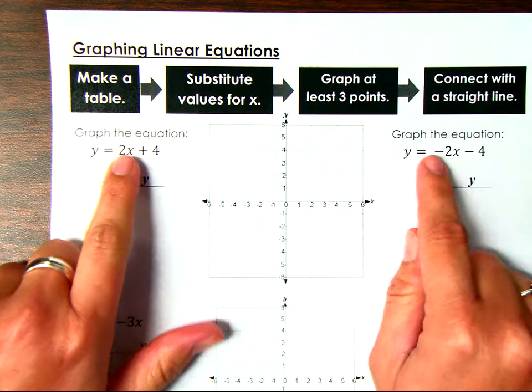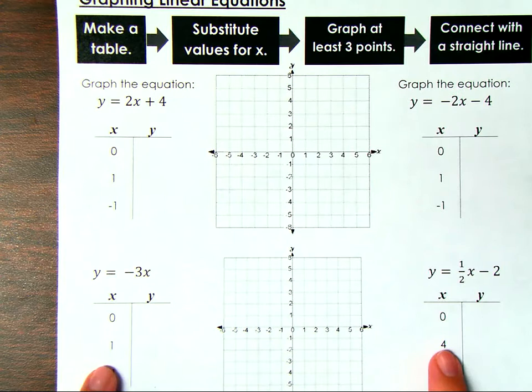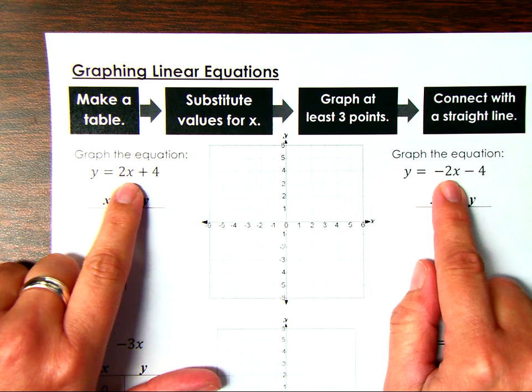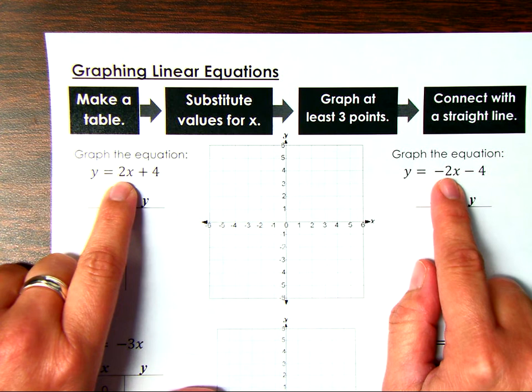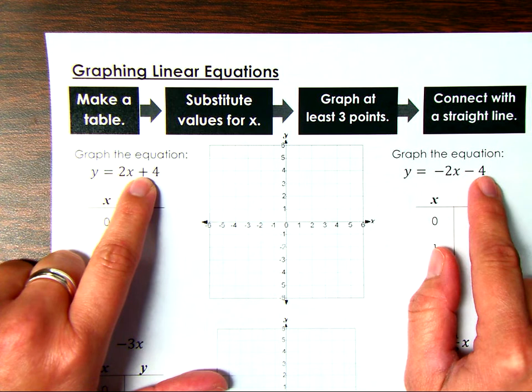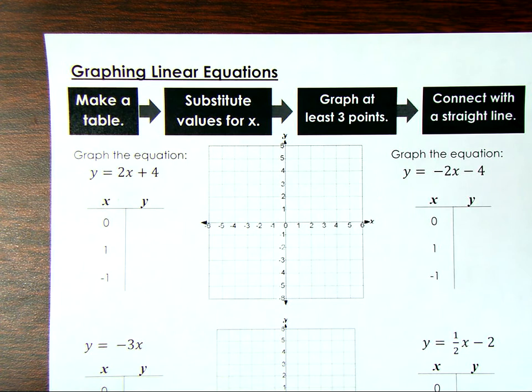We're going to graph both of these equations and see what's happening. If you first look, these look almost alike, but this is a positive 2 as the coefficient and this is a negative 2. This is a positive 4 as the constant and a negative 4 as the constant. So we're going to look and see how those are going to be different.